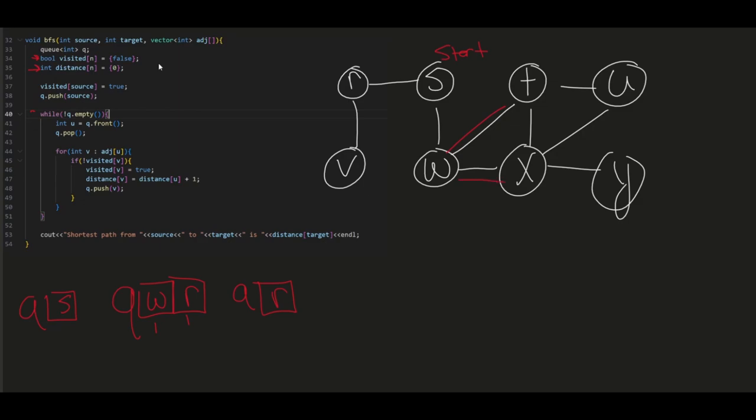So go ahead and add T and X to the queue. Now the distance from T and X is 2, since we go 1 and this is 1, 1 and then 2, 2 from S.